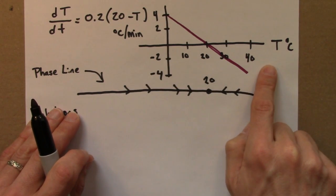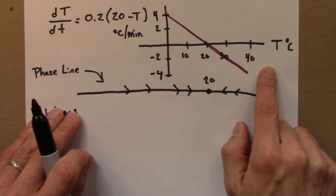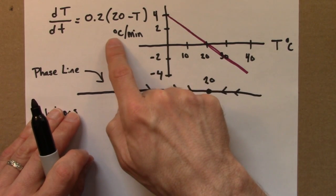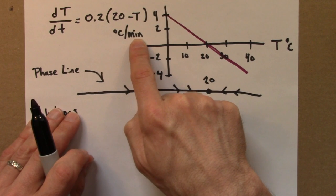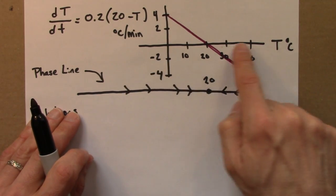And here's a plot of the right-hand side, the same thing I showed before, that shows how the rate of change in degrees Celsius per minute depends on the temperature.